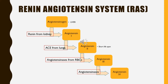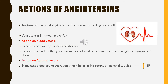Angiotensin 2 has a short half-life of 1–2 minutes as it is rapidly metabolized and converted to form angiotensin 3 by angiotensinases present in the RBCs and vascular beds and tissues. Likewise, angiotensin 3 is converted into angiotensin 4. Angiotensin 1 is a physiologically inactive form that acts as the precursor for the formation of angiotensin 2.